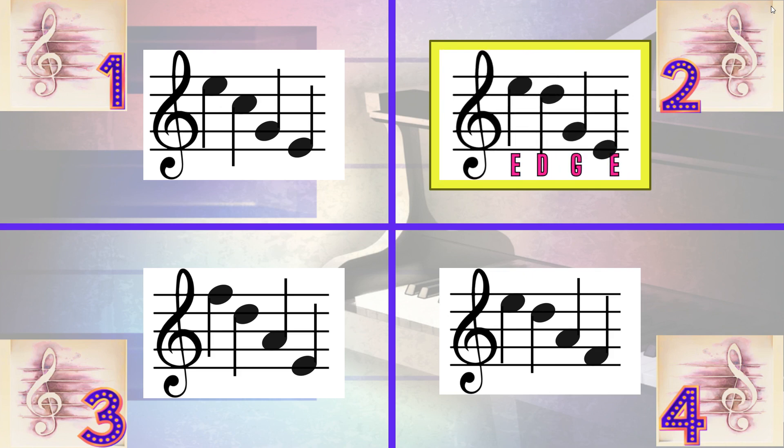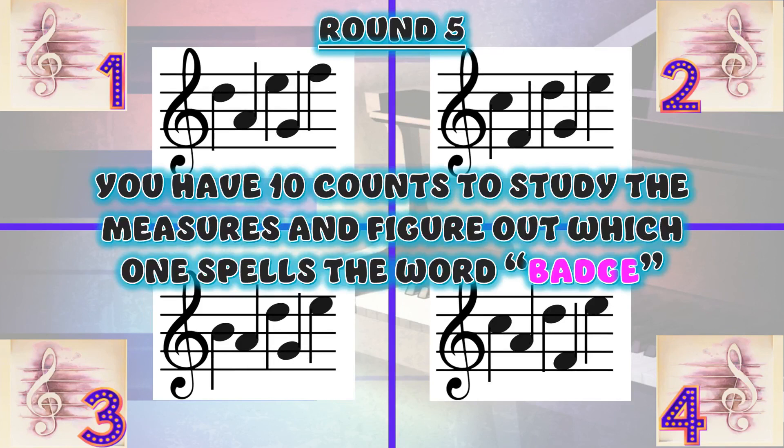If you got it correct, give yourself a mini round of applause. Then come back to the center of the room for the next round. Round five. You have ten counts to study the measures and figure out which one spells the word 'badge.'